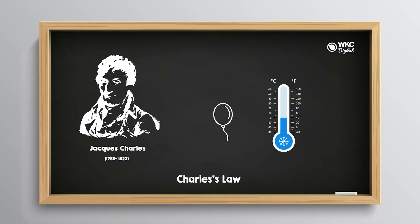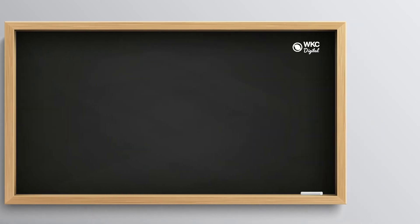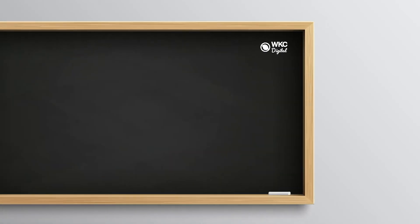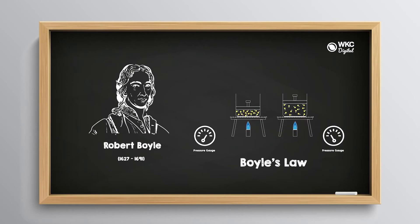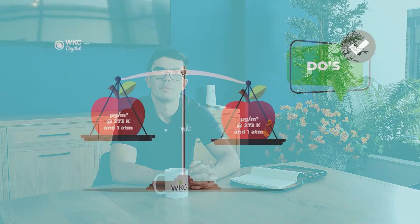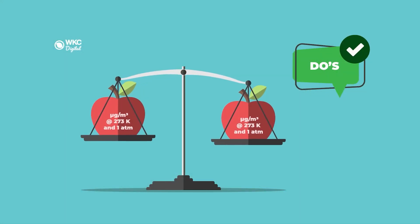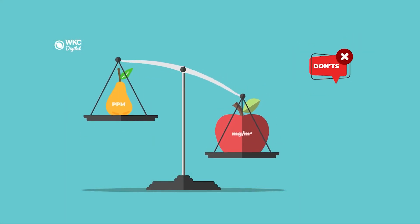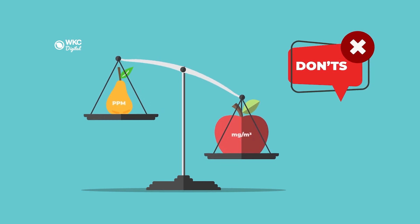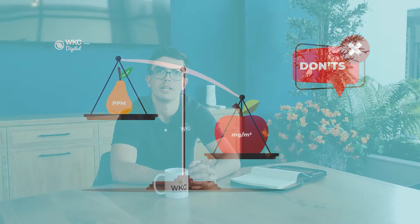Charles's law states that the volume of a given gas sample is directly proportional to its absolute temperature at constant pressure. Boyle's law states that the volume of a given amount of gas is inversely proportional to its pressure at a constant temperature. In summary, you'll want to compare apples with apples by converting your measured values to include the same units and reference conditions as the guideline value you wish to compare it to.